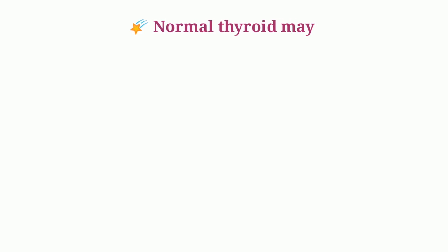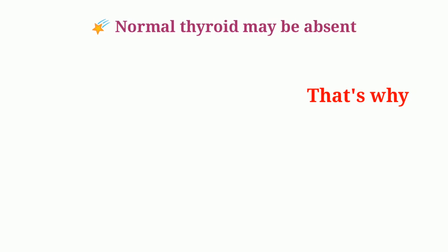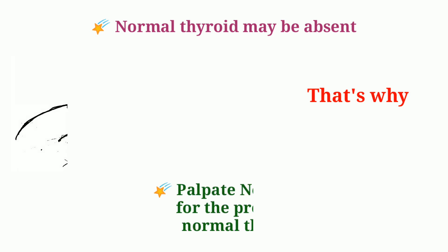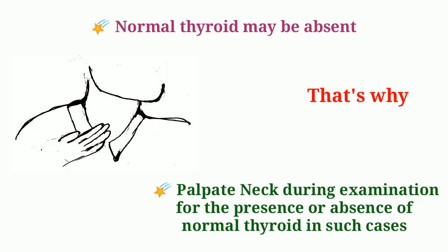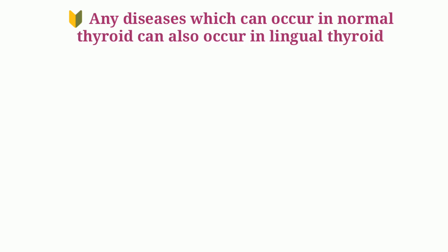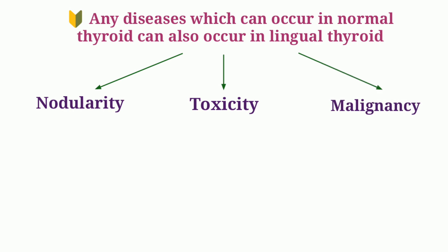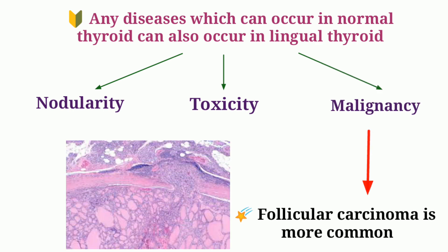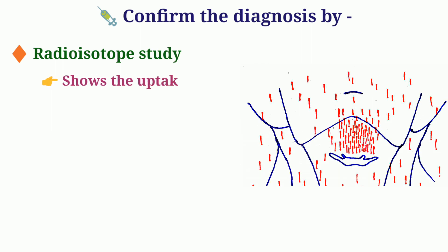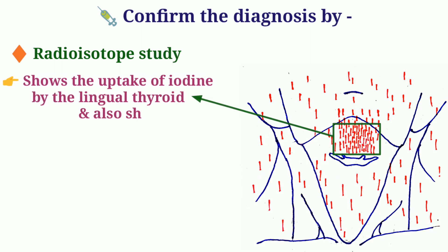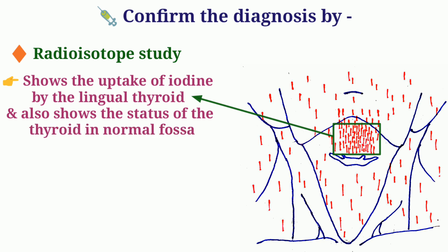Normal thyroid may be absent in such cases, making it absolutely necessary to palpate the neck during examination for the presence or absence of normal thyroid. Remember, any diseases that can occur in normal thyroid can also occur in lingual thyroid — nodularity, toxicity, malignancy. If it turns malignant, follicular carcinoma is more common. Diagnosis is confirmed by radioisotope study, which shows the uptake of iodine by the lingual thyroid and also shows the status of the thyroid in the normal fossa.